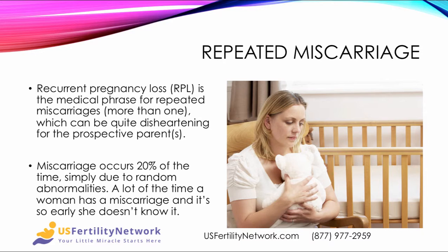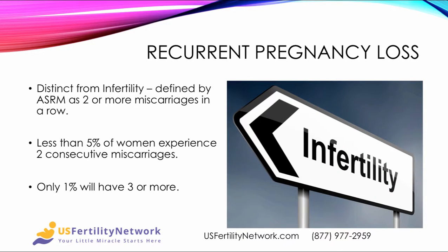Recurrent pregnancy loss, RPL for short, is the medical phrase for repeated miscarriages, which can be very disheartening to the prospective parent. Miscarriage regularly occurs 20% of the time simply due to random abnormalities. A lot of the time a woman that has a miscarriage, it happens so early that she doesn't even realize it. So it needs to be looked at distinct from infertility. It's defined by the American Society of Reproductive Medicine as having two or more miscarriages in a row. Less than 5% of women experience two consecutive miscarriages and only 1% will have three or more in a row.